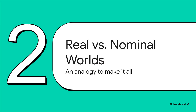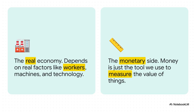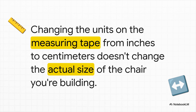Before we get bogged down in formal textbook definitions, I want to use a really simple analogy. Imagine the entire economy is a big workshop. The stuff it can actually produce — like chairs, tables — depends on real things: your workers, your tools, your technology. That's the real side of the economy. Now think of money as just a measuring tape — the tool we use to put a price tag, a nominal value, on all the things in that workshop. If you swap your measuring tape from one that uses inches to one that uses centimeters, did the actual physical size of the chair change? No way. All you did was change the number you used to describe its size. And that's exactly what classical economists were getting at — they argued that money works the same way.